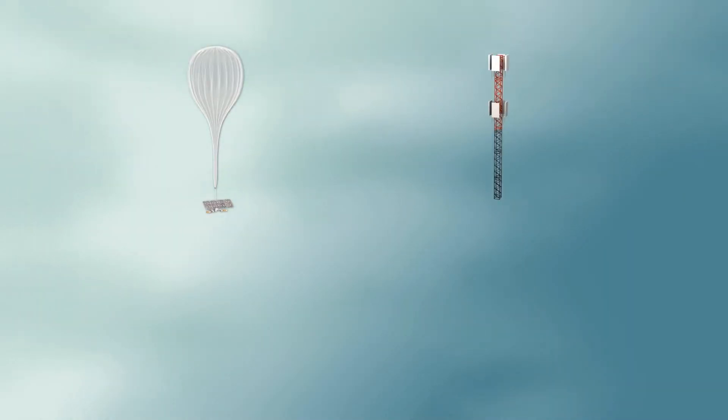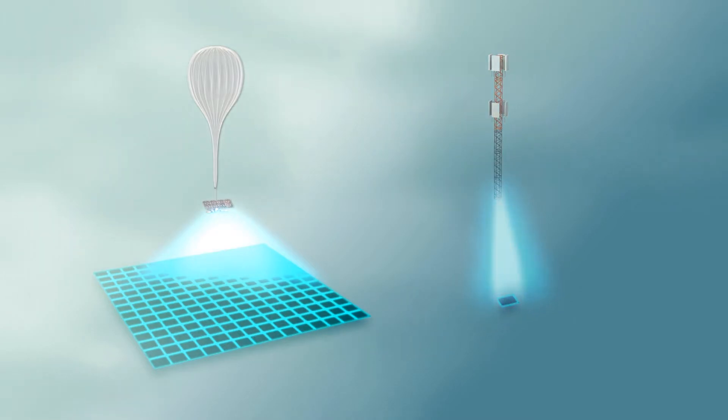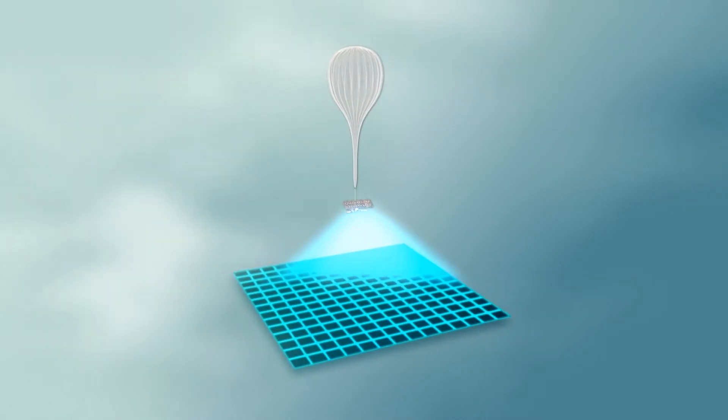Each vehicle has a claimed coverage footprint of over 11,000 square kilometers, about 200 times that of a cell phone tower.